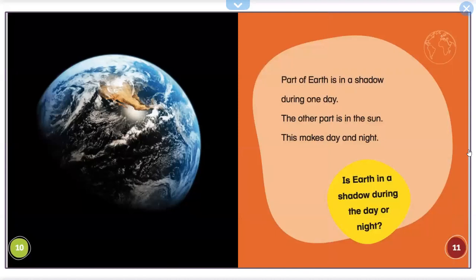Part of Earth is in a shadow during one day. The other part is in the sun. This makes day and night. Is Earth in a shadow during the day or night?